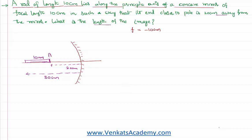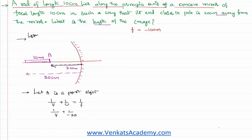The question asks for the length of the image. Let us solve the problem in two parts. Consider A as a point object — one end of the rod. Write the mirror formula: 1/v + 1/u = 1/f. Here u is measured against the direction of incident light from the pole, so u equals minus 20. f value is minus 10. That implies 1/v = minus 1/10 plus 1/20. The LCM is 20, giving minus 2 plus 1, so 1/v = minus 1/20.